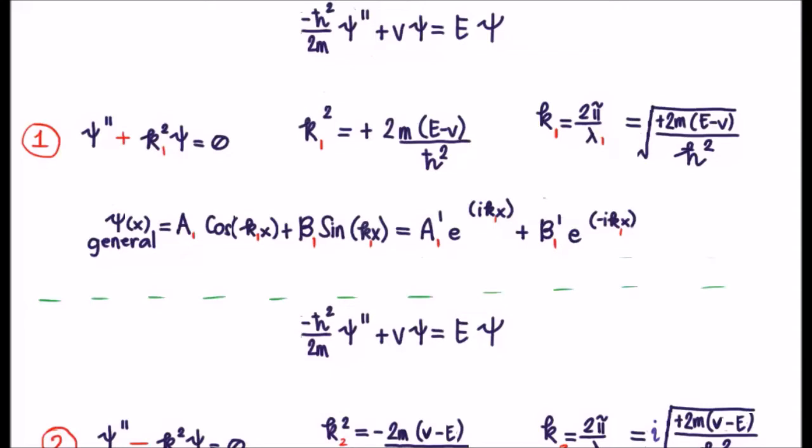So the bottom line here is if you come across the time independent Schrödinger equation and it's written such that there is a plus between the second derivative and zeroth derivative terms, then the solution will be a linear combination of cosines and sines, and you can just put that straight down. Of course, if you want you can calculate the wavelength using this expression here.